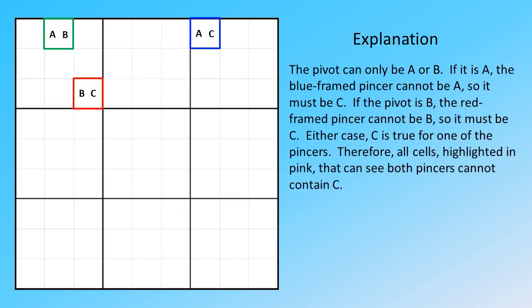The pivot can only be A or B. If it is A, the blue-framed pincer cannot be A, so it must be C. If the pivot is B, the red-framed pincer cannot be B, so it must be C. Either case, C is true for one of the pincers. Therefore, all cells highlighted in pink that can see both pincers cannot contain C.